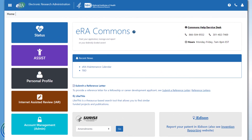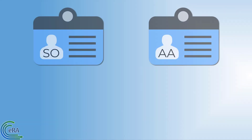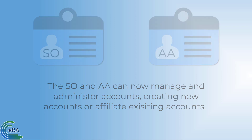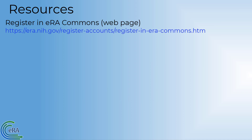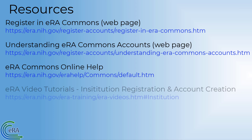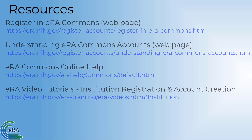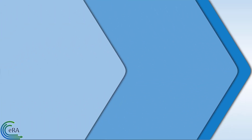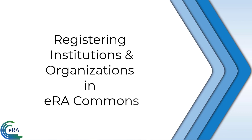With the institution now successfully registered with eRA Commons, the SO and AA can now go about the task of creating new accounts for principal investigators, PIs, and/or affiliate existing PI accounts to their institution. There are a number of resources available to help you with the registration process and account creation. If you need additional help, please contact the eRA Service Desk. This concludes the tutorial on registering institutions and organizations in eRA Commons.